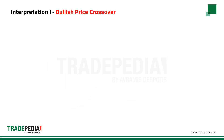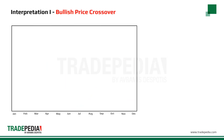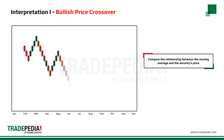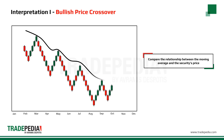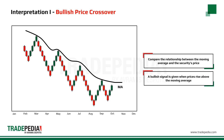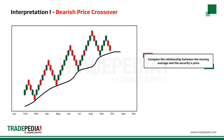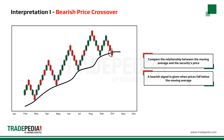Now let us see how moving averages are interpreted. The simplest and most popular method is to compare the relationship between the moving average and the security's price. A bullish signal is given when prices rise above the moving average. On the other hand, a bearish signal is given when prices fall below the moving average.